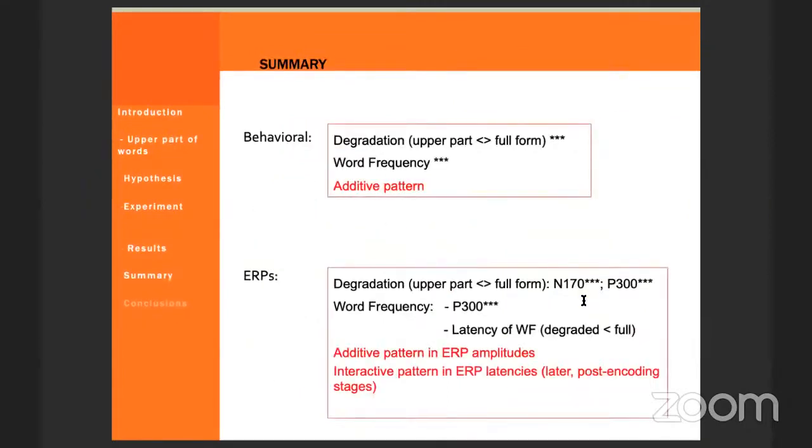So as a summary, the behavioral results showed a degradation effect, a main effect of degradation, a main effect of word frequency, which points to an additive pattern. And for the ERPs, there was a main effect of degradation and the main effect of word frequency. They didn't interact, and they occurred mainly in different stages of word processing.